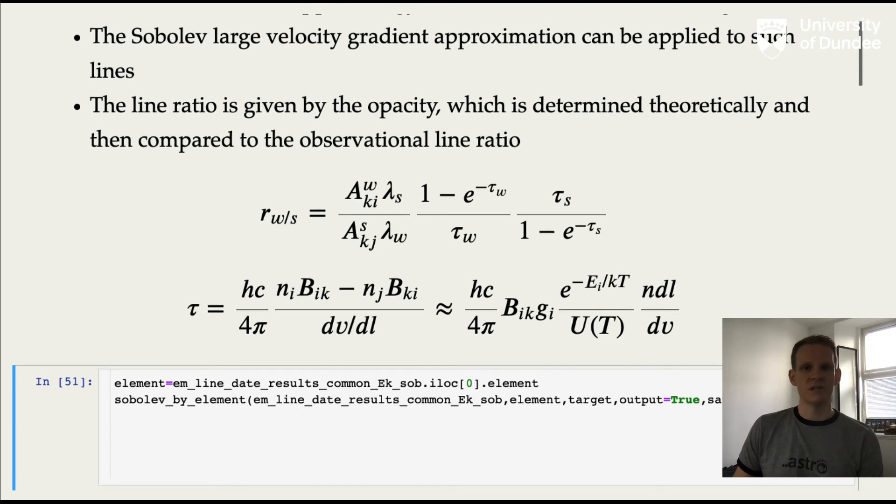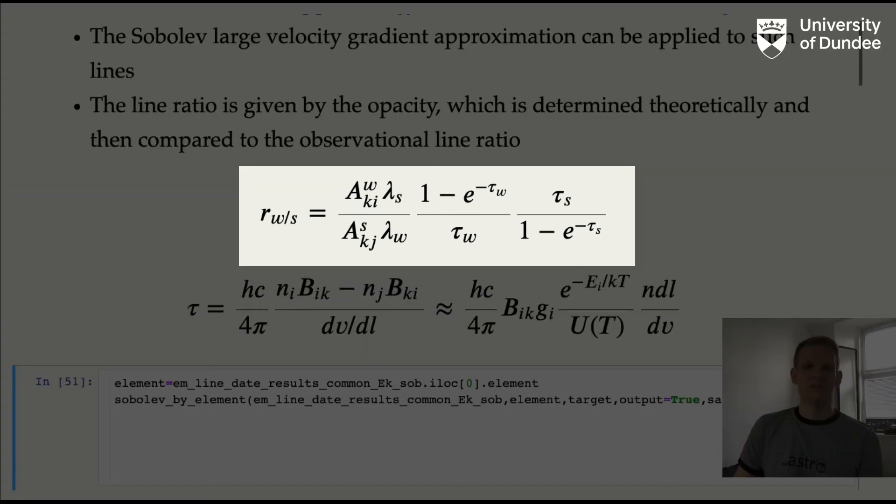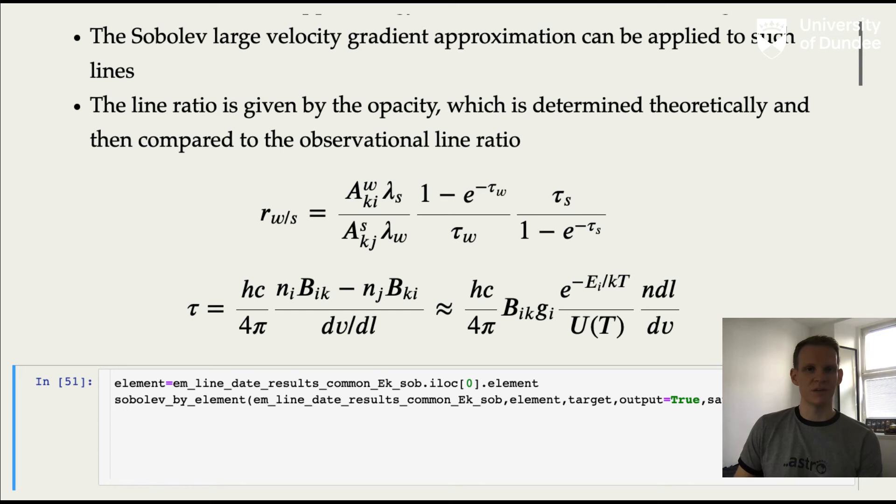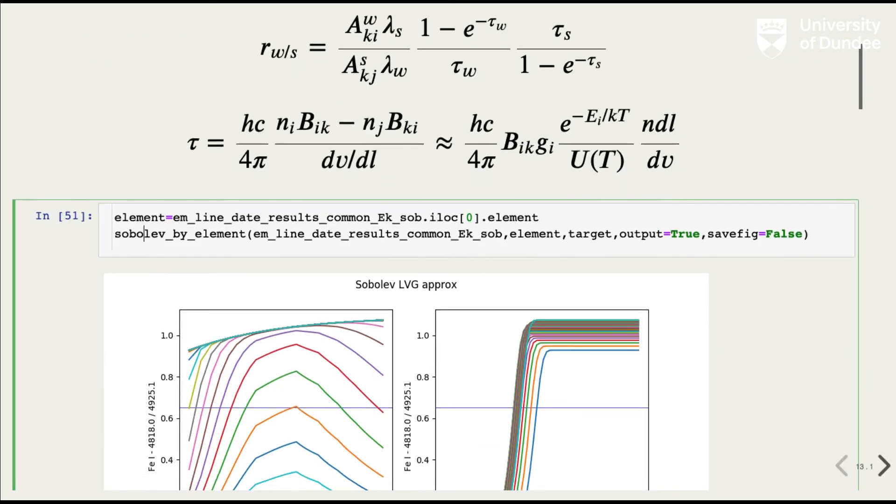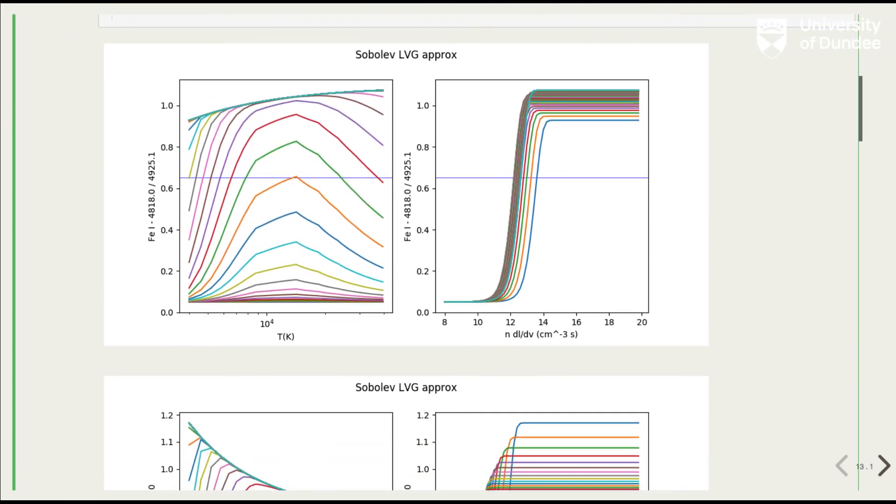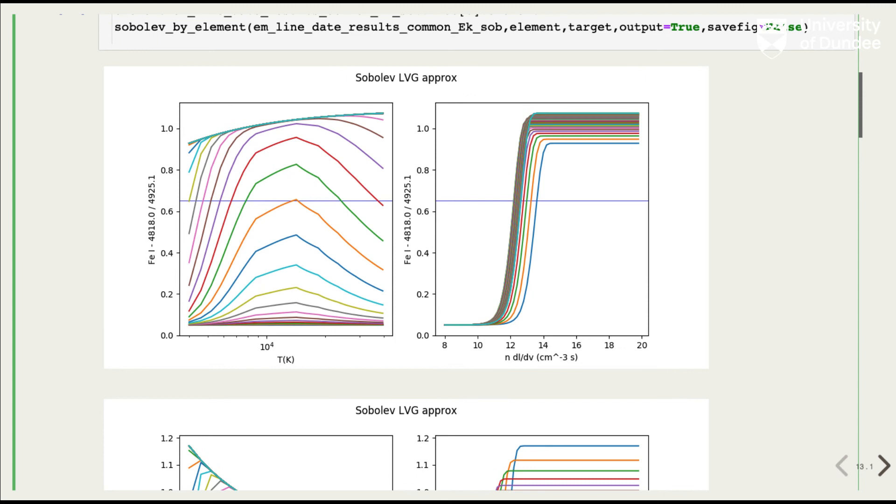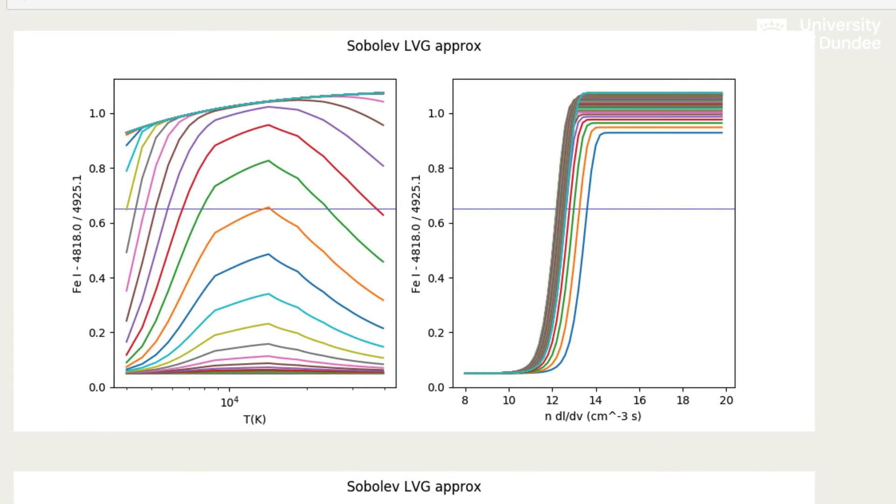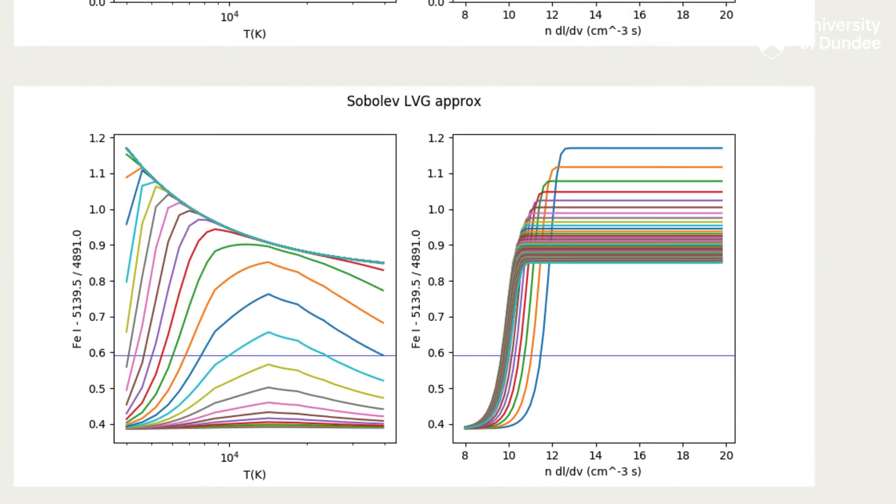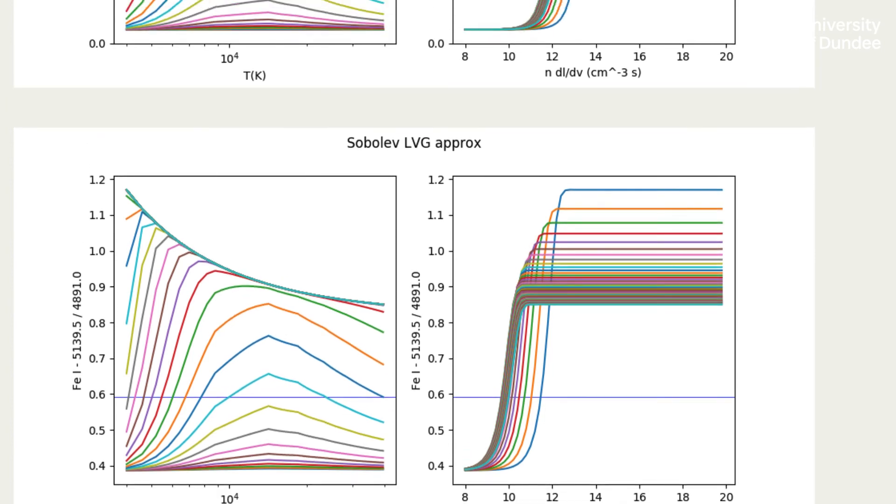So one of the example physical calculations I can show you here is with lines originating from the same upper energy level. And we can use the Sobolev large velocity gradient approximation. I won't go into all the details of this equation, but essentially you take the lines from the same upper energy level and compare the observed line ratios that you get from the data to the theoretical line ratios that you calculate with this equation. So this uses the transition properties from the NIST database for those lines. You then obtain plots to show the observed line ratios for the given pair of lines as this blue horizontal line. And the curves are the lines of constant densities for different temperature ranges on the left, and on the right lines of constant temperature for their corresponding density ranges. And by doing this for multiple lines, you can find out where the intersections are different. And this allows us to determine best fit regions for the temperature and densities of this emitting material.